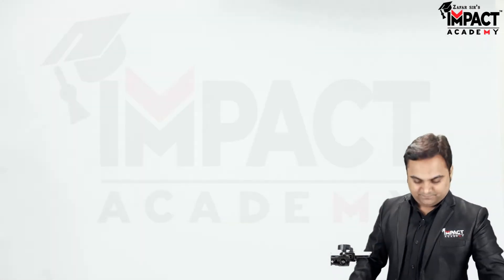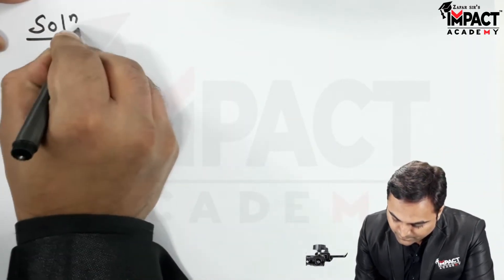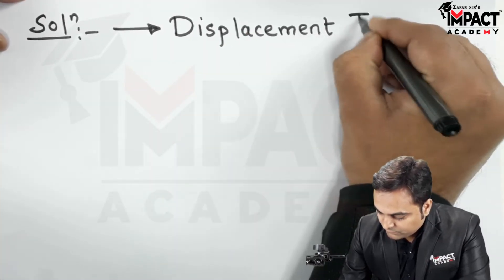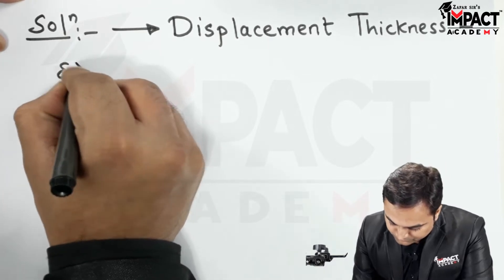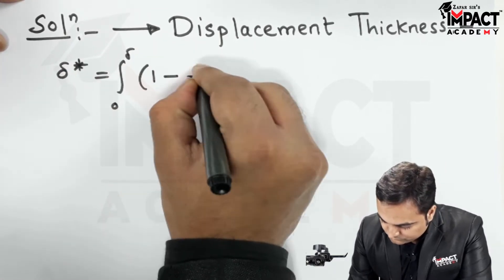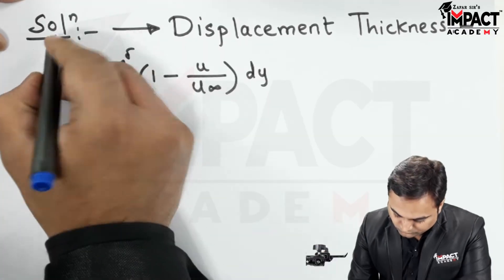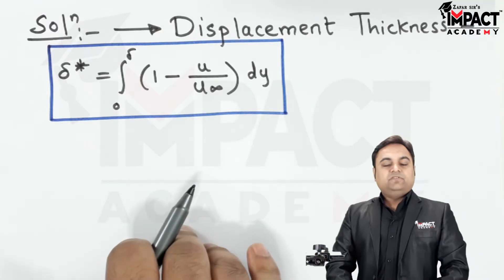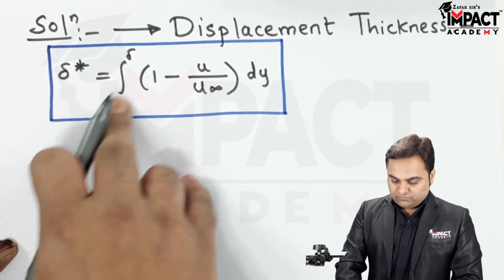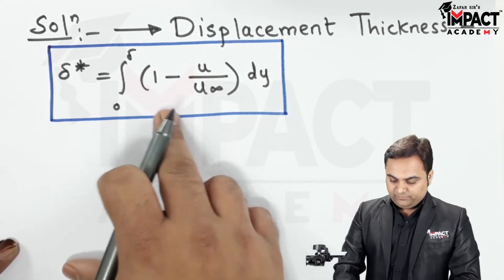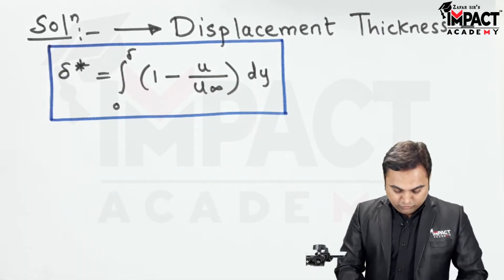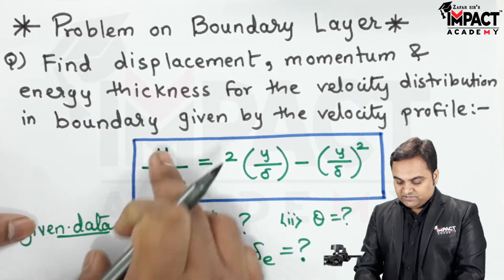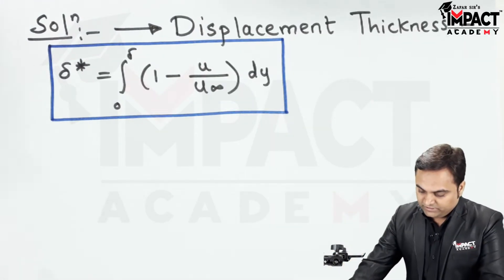Let's start with the solution. First, I will find the displacement thickness. The formula is: delta star equals integration from 0 to delta of (1 minus u/u∞) dy. Now u/u∞ is given and I am going to substitute it.